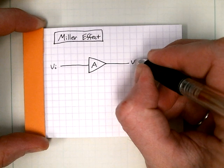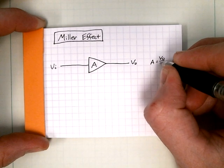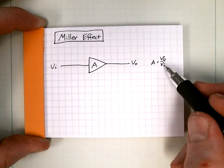Input. Of course, A is just vo over vi. It's really lowercase.